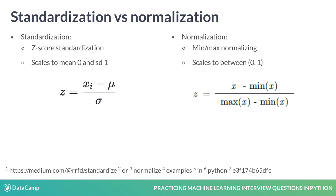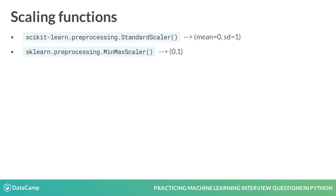This has the effect of scaling the features between 0 and 1. So both approaches are scaling the data, they just do so differently. In the exercises, you'll use two functions from scikit-learn's preprocessing module: StandardScaler standardizes to mean 0 and standard deviation 1, while MinMaxScaler normalizes the data to lie from 0 to 1.